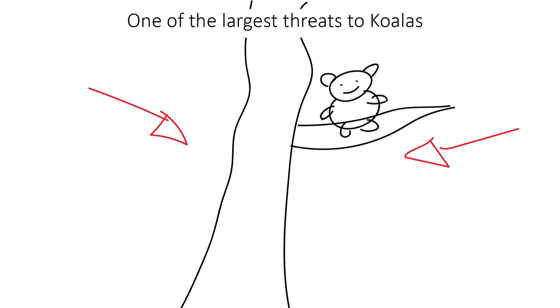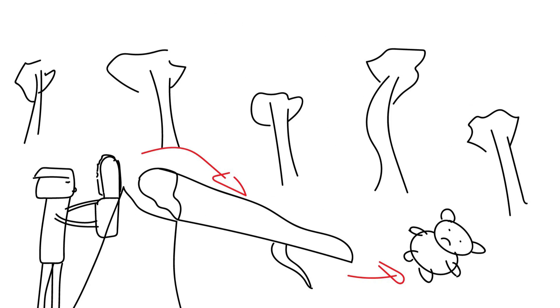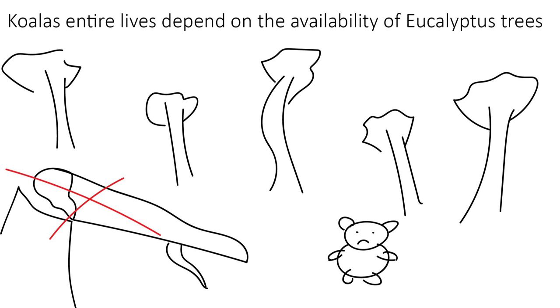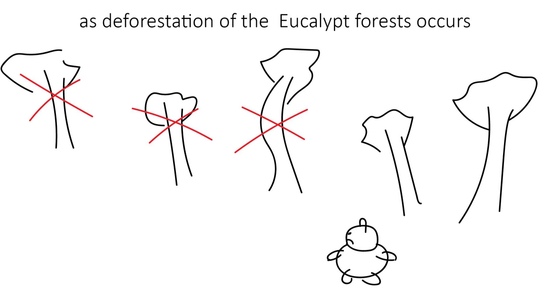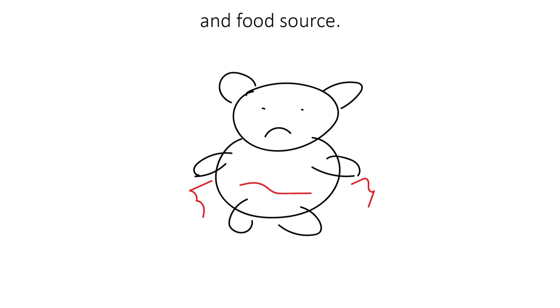One of the largest threats to koalas is deforestation. Koalas' entire lives depend on the availability of eucalyptus trees. As deforestation of the eucalyptus forest occurs, koalas are losing their homes and food source.